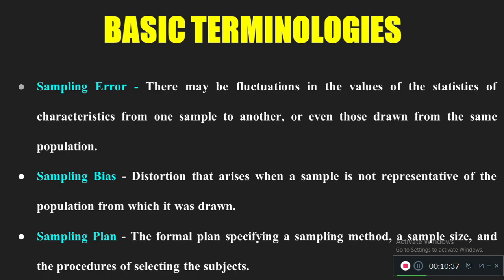Sampling bias means a tendency to commit mistakes while selecting the sample. For example, if I want to select samples for two groups and I purposefully select those who are very similar in one group, that kind of mistake is called sampling bias. Another example is not keeping equal representation of samples across two groups. Sampling bias can affect the result of the study very significantly.